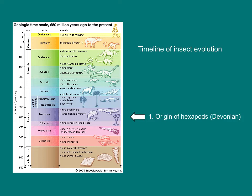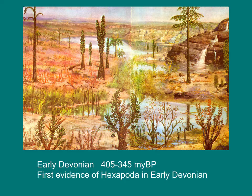The first evidence of insects is from the Devonian, roughly 400 million years ago. The first insect fossils were small, wingless forms, feeding mostly on plants and detritus. We think the Devonian looks something like this — low-growing vascular plants living on the margins of freshwater habitats.